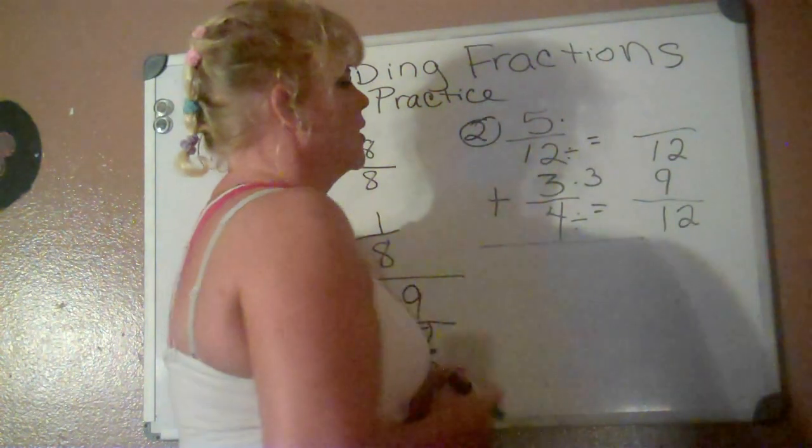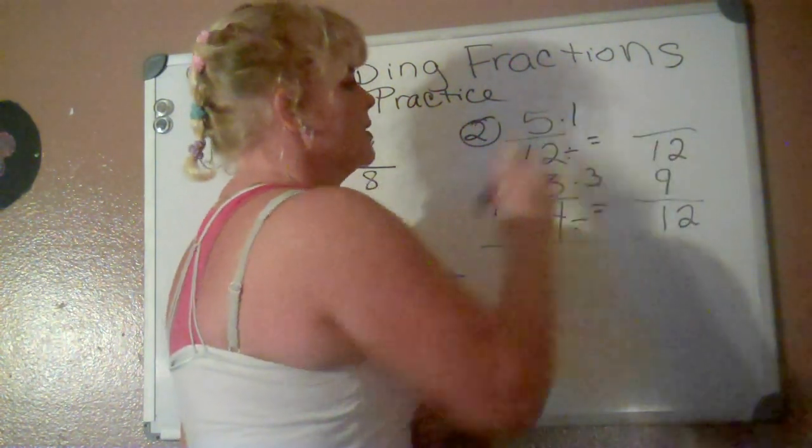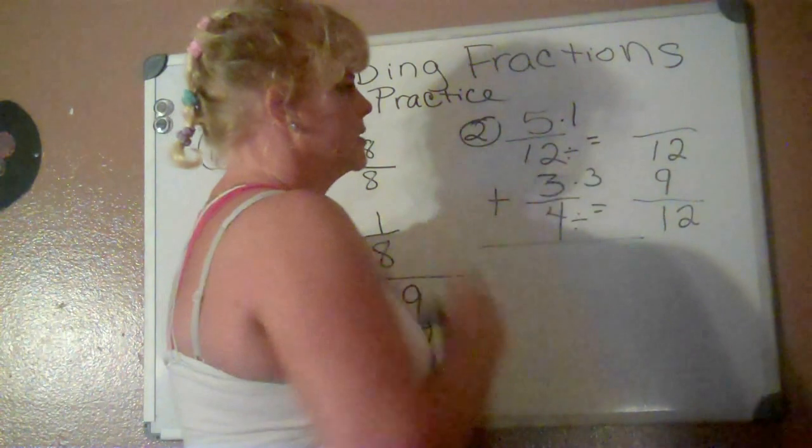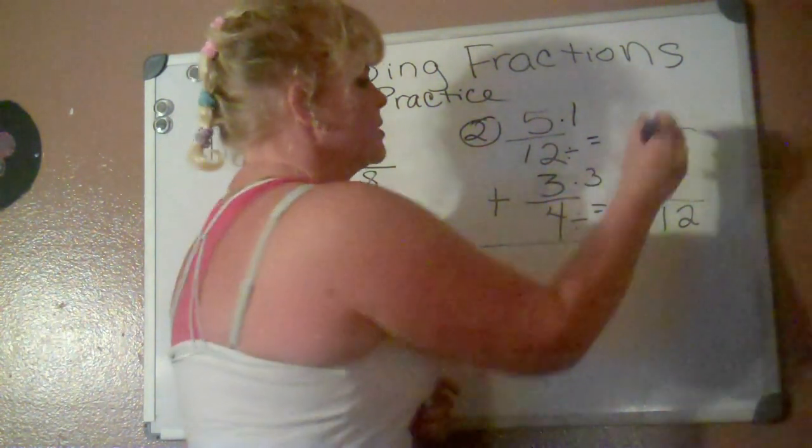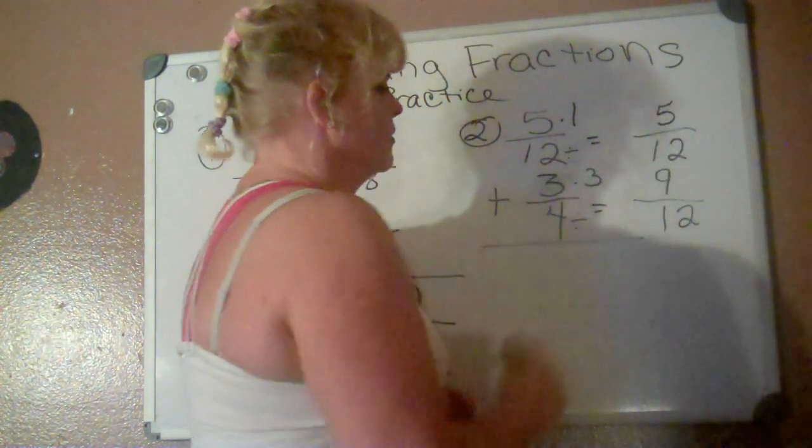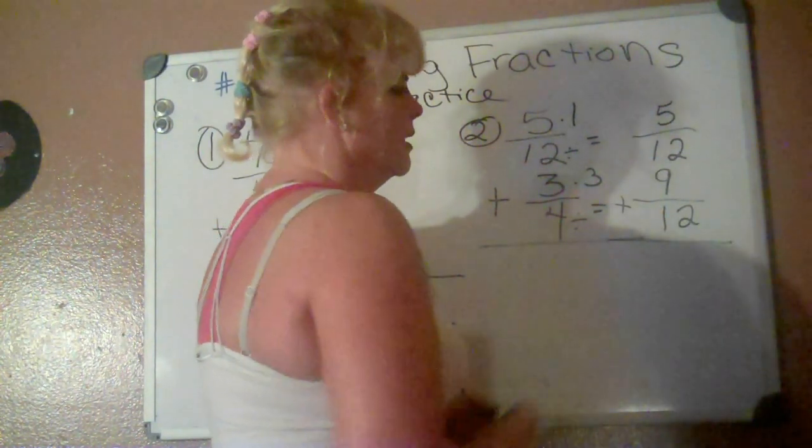Going across. Twelve divides into twelve how many times? One time we carry it up top. Multiply. That's what it says to do. Five times one equals five.